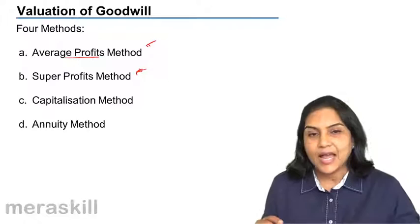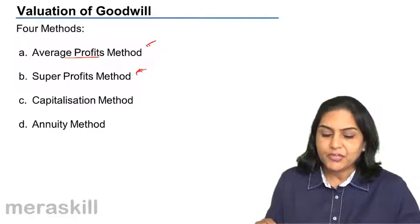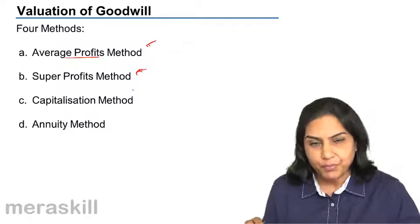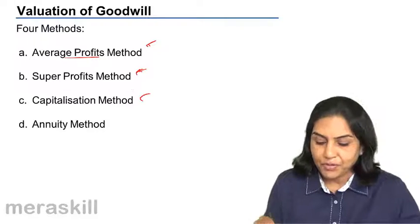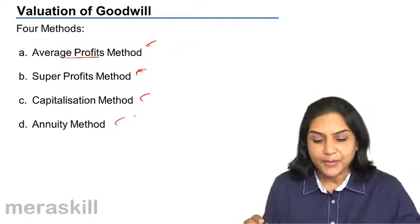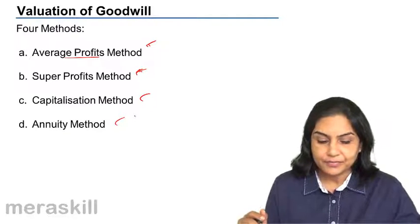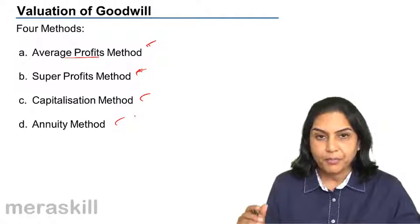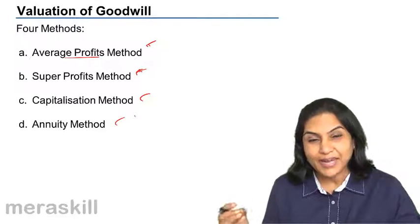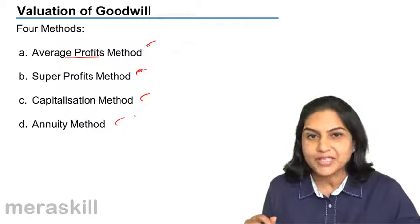Or there is a capitalization method which is a variation of the super profits method. And the fourth method is the annuity method which considers profits, future profits but at their current values, present values.